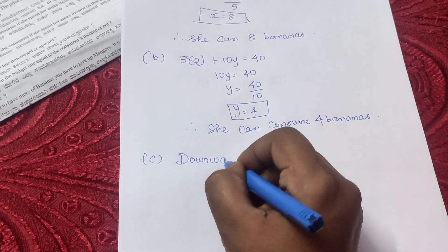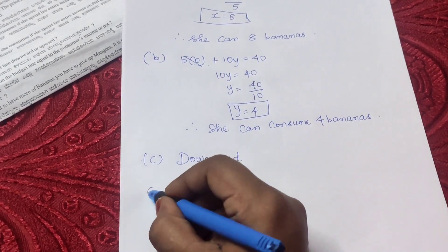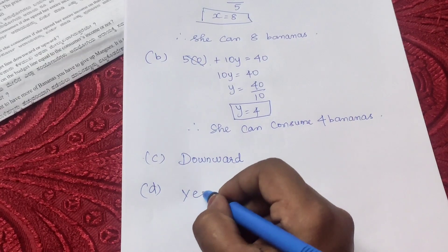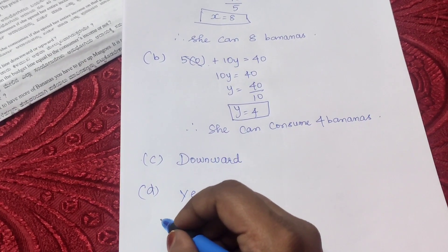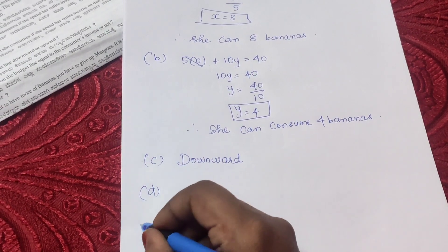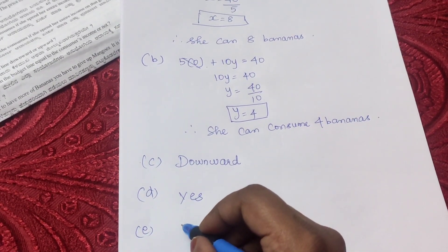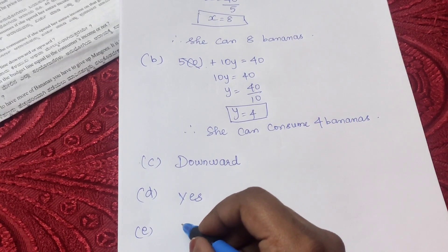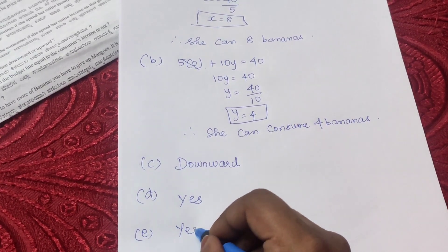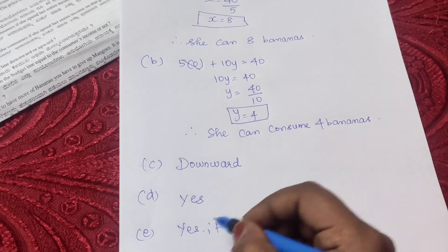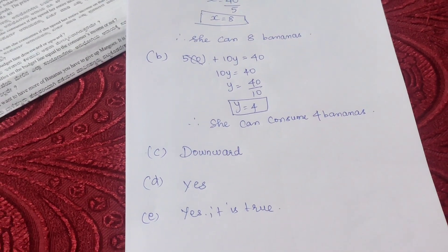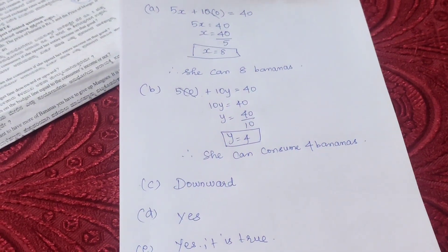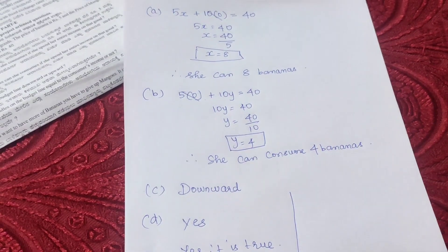Now the third question: is the budget line downward sloping? Yes, it is downward sloping. Part (d): are the bundles on the budget line equal to the income? Yes, it is equal to consumer income. Part (e): if you need to have more mangoes, do you need to give up bananas or vice versa? Yes, it's true — if you need to have more mangoes, you need to give up bananas.